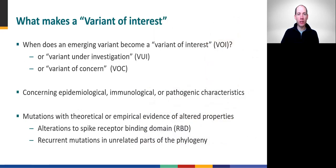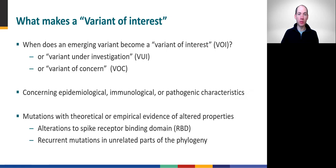Some variants may warrant elevated labels to indicate particular importance to public health, such as variant of interest, variant under investigation, or even variant of concern. At this time, formal criteria for classifying SARS-CoV-2 variants into such categories are still being debated among researchers and public health institutions. In general, these variants are flagged because they exhibit concerning epidemiological, immunological, or pathogenic characteristics, including rapid expansion or particular mutations linked to altered viral properties, some of which may appear multiple times in the population.